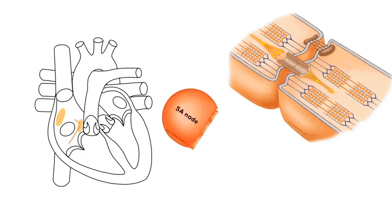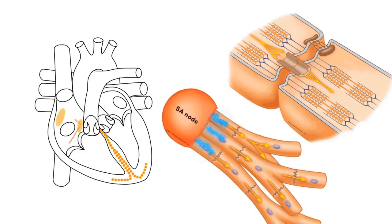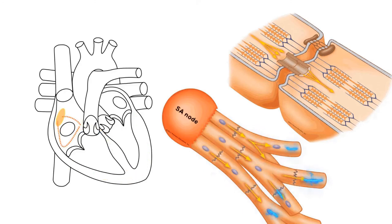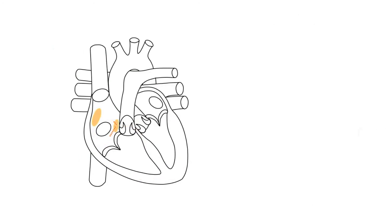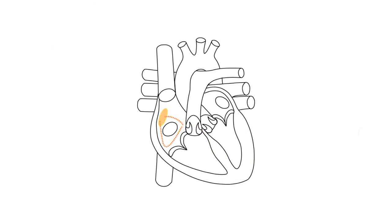When the sinoatrial node sends out an electrical stimulus causing an action potential in the cells surrounding the sinoatrial node, the action potential is then able to travel to the neighboring cells until the action potential has passed through all the contractile cells of the heart. This allows for a smooth flow of electrical current from the top down in the atria and from the bottom up in the ventricles.